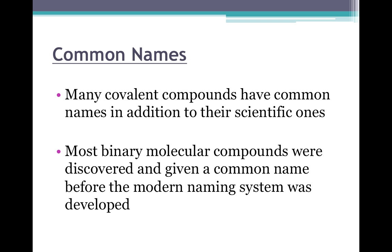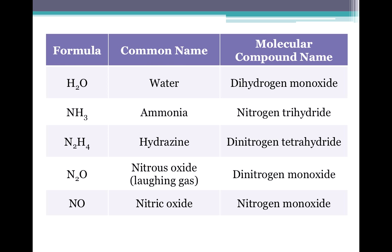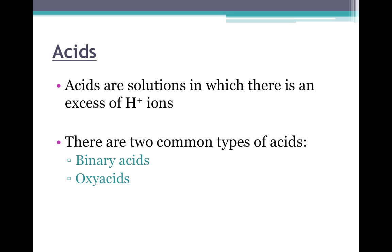The naming system we just looked at has come about very recently. Before this formal naming system, most of these compounds already existed, so some binary molecular compounds had names before they were formally named — these are called common names, and we often use those more than the actual names. The best example is water: the actual name should be dihydrogen monoxide, but we just say water. Other examples include ammonia and nitrous oxide, also known as laughing gas at the dentist.